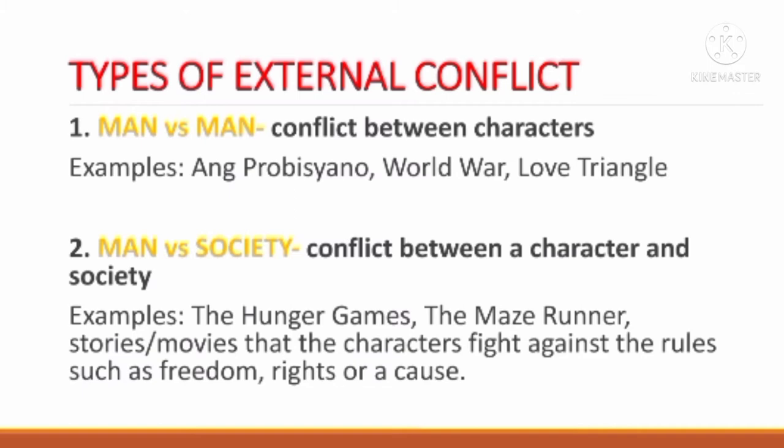Second, man versus society — conflict between a character and society. This type of conflict happens when the character has a problem with the society in which they live, including laws or the beliefs of groups. Examples include The Hunger Games, where the characters try to put a stop to the Capitol's rules over Panem, and The Maze Runner — stories or movies where characters fight against rules such as freedom, rights, or a cause.